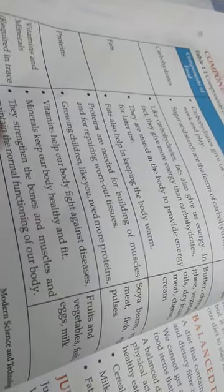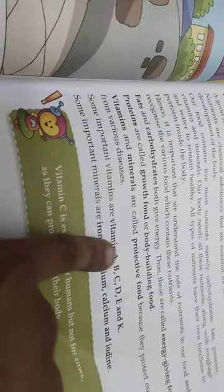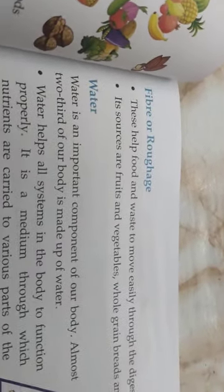Vitamins and minerals: vitamins help our body fight against diseases. Minerals keep our body healthy and fit — they strengthen bones and muscles and maintain the normal function of our body. So vitamins and minerals are protective; they protect us by fighting diseases. Sources include fruits, vegetables, fish, eggs, and milk.